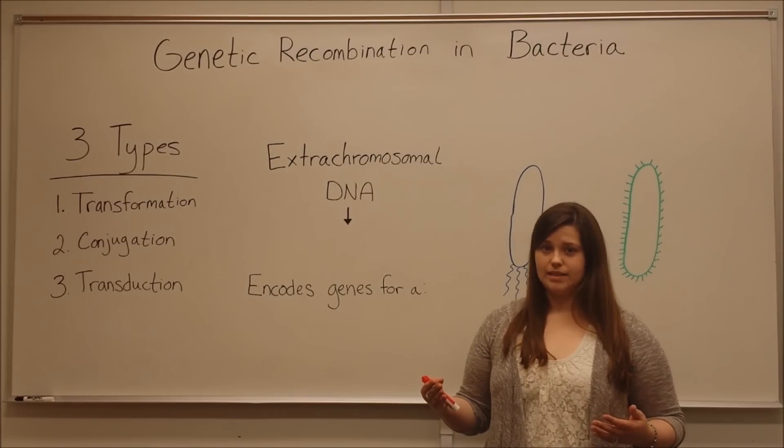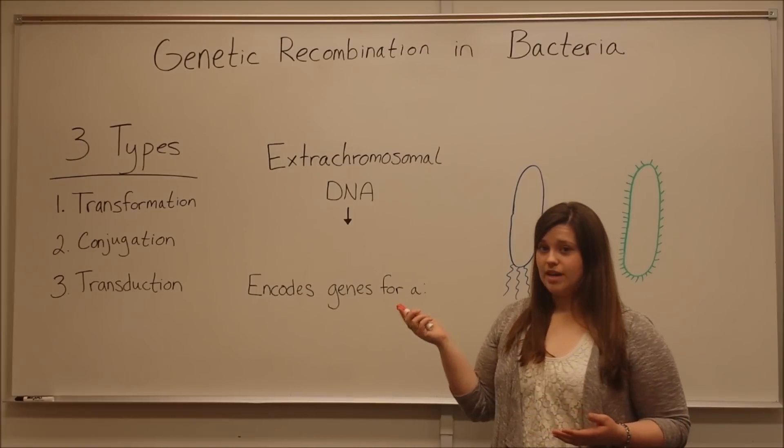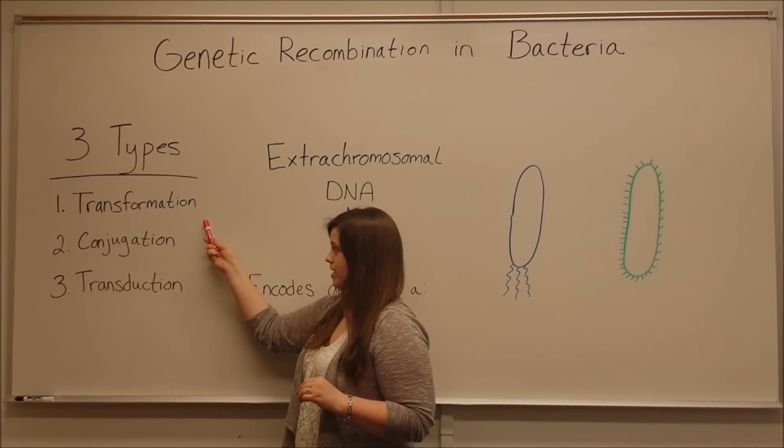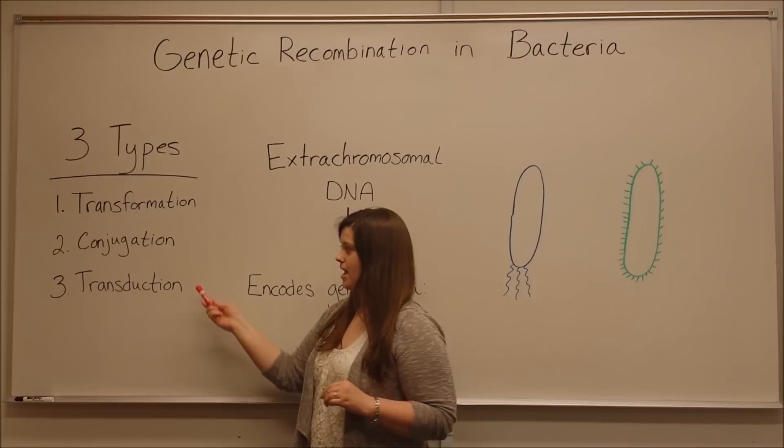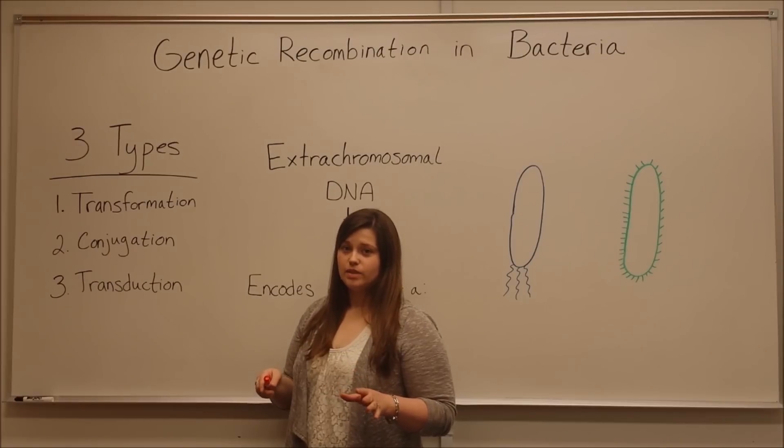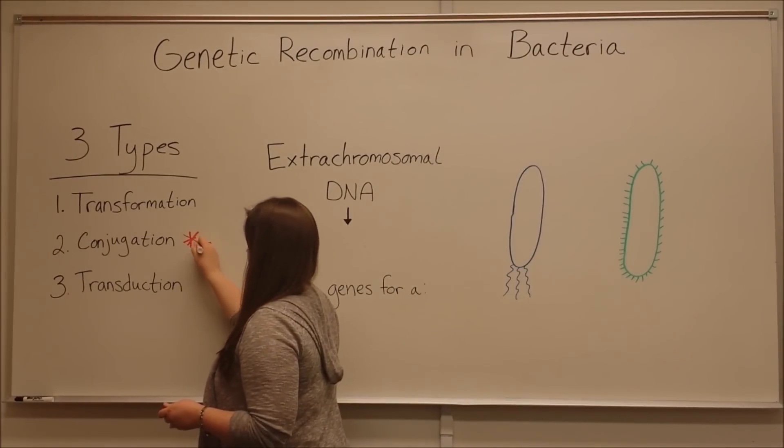These are all examples of ways that bacteria benefit from genetic recombination. The three types of genetic recombination are transformation, conjugation, and transduction. I have videos on all three types. In this video, we are talking about conjugation.